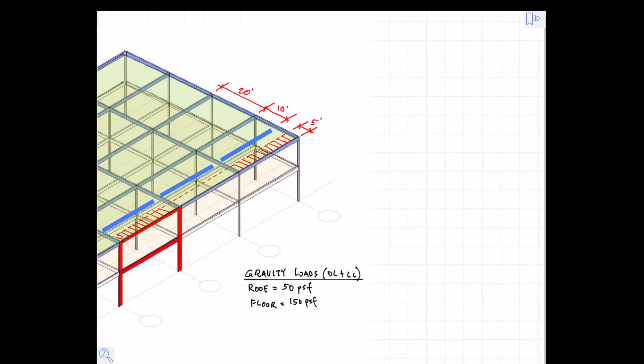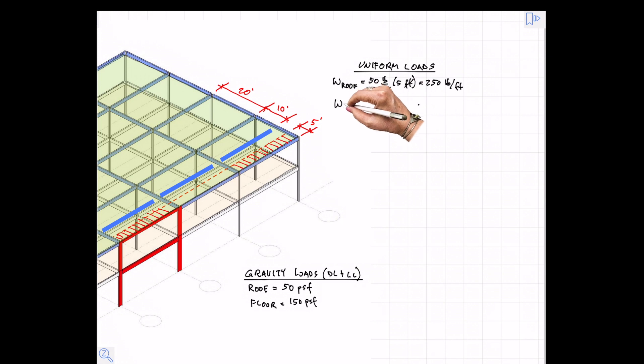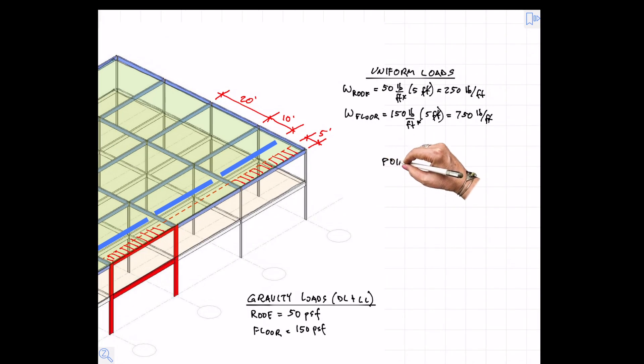So we start out with our gravity loads. Those are 50 pounds per square foot on the roof and 150 pounds per square foot on the floor. Meaning we have uniform loads on the roof: multiply the 50 times 5 to give us 250 pounds per foot on the roof and 150 times 5 gives us 750 pounds per foot on the floor.